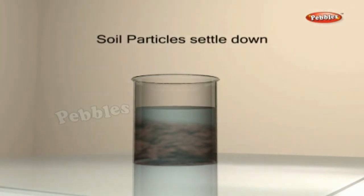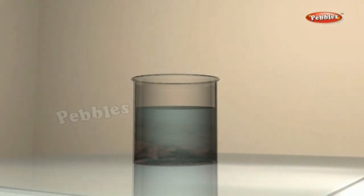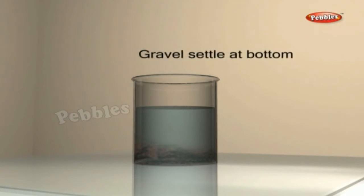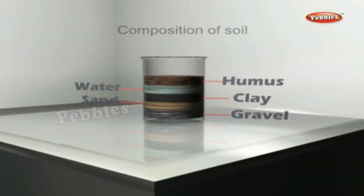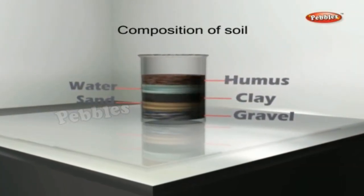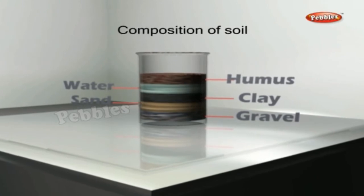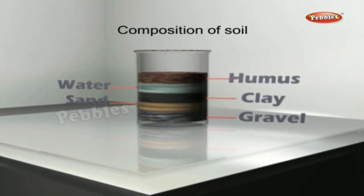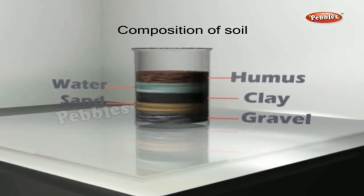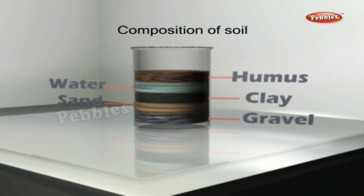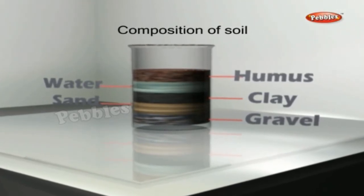You will find that the soil particles settle down in the jar as shown. The largest soil particles, called gravel, will settle at the bottom. The grains of sand will be above the clay particles. Above the clay particles is turbid water. Finally, floating on the top of the turbid water, you will find humus, which is decayed organic matter.